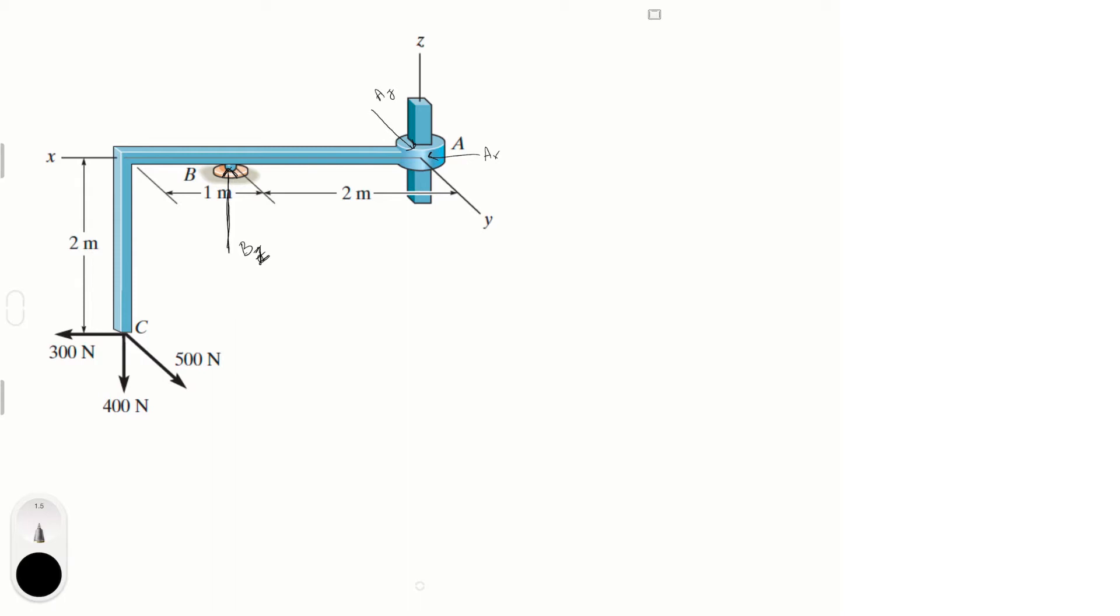The problem didn't say that the connection at A doesn't have any reactive moments, so we have to do them as well. In the X we have a reactive moment MAX, in the Y we have MAY, and in the Z we have MAZ. I'm assuming that positive is counterclockwise as if you were looking from the top of the axis.